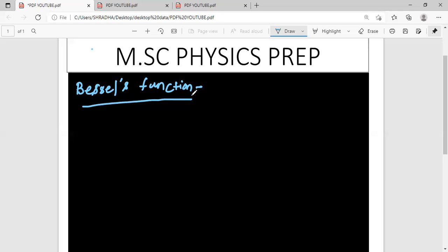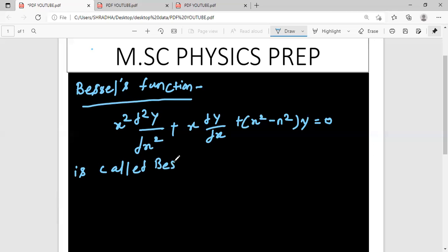Let us discuss the Bessel Function. X square d square y by dx square plus x into dy by dx plus x square minus n square y equals to zero. This is your Bessel Function.